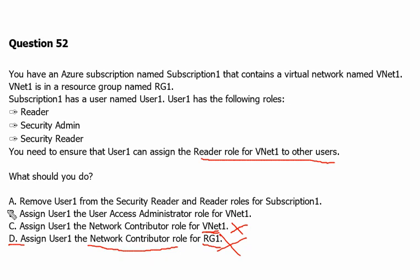Option B is to assign User 1 the User Access Administrator role. As we know from the definition, User Access Administrator is specifically designed to assign roles to other users or members, so this is the correct answer. Option A is to remove User 1 from the Security Reader and Reader role for the subscription, and that will definitely not help in assigning roles to other users. So Option A is wrong, and Option B is the correct answer.